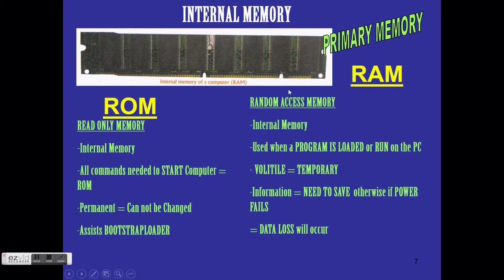You can remove RAM and replace it with larger memory to speed up the computer. RAM is primary and temporary. ROM is pre-programmed, helps to start the computer, is permanent — you cannot remove it or make it faster — and it works together with the bootstrap loader to start the computer.